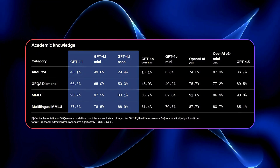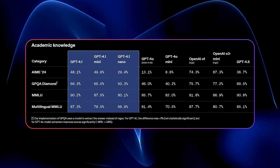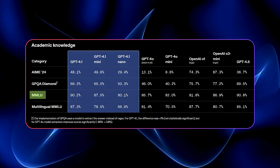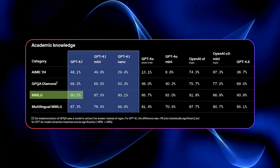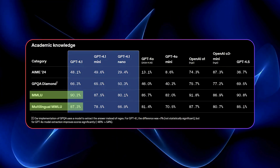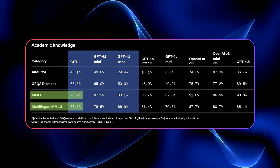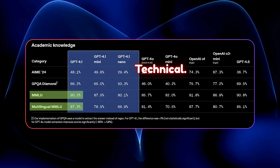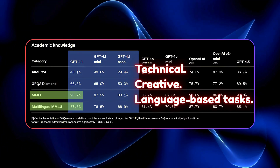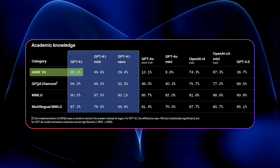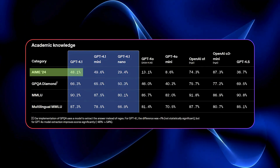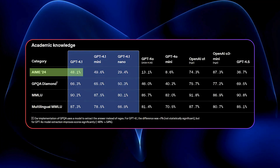And it's not just developers and businesses that benefit — these models are also top-notch for academics. GPT 4.1 scored 90.2% on MMLU and 87.3% on multilingual MMLU. Whether you're dealing with technical, creative, or language-based tasks, these models are built for excellence. And in math reasoning, they scored 48.1% on the AIM 2024 exam, making them one of the strongest performers out there.